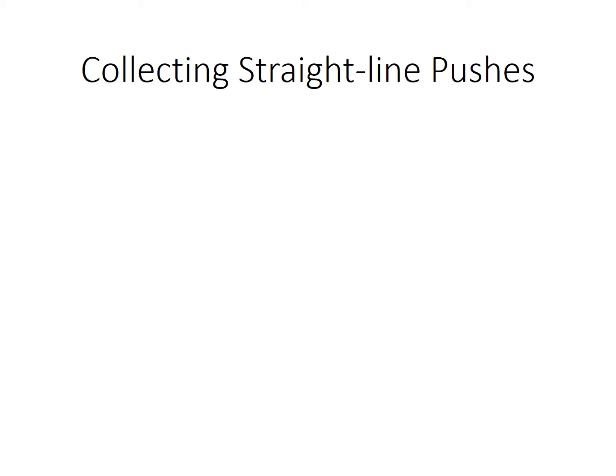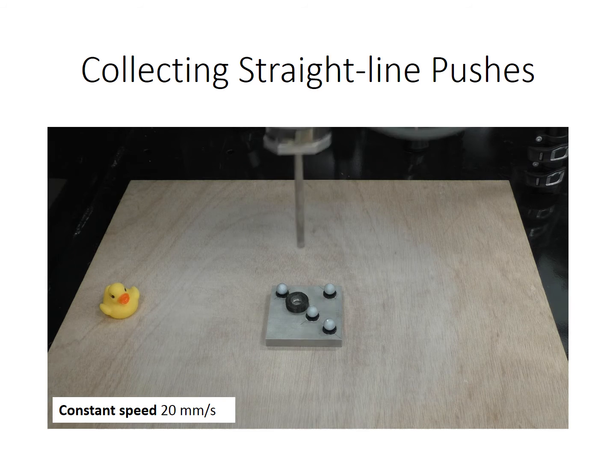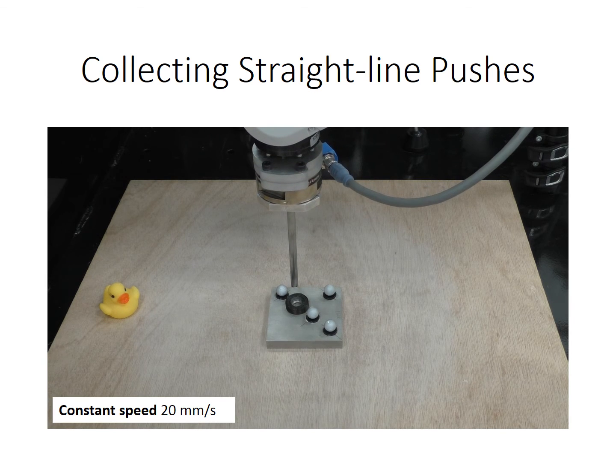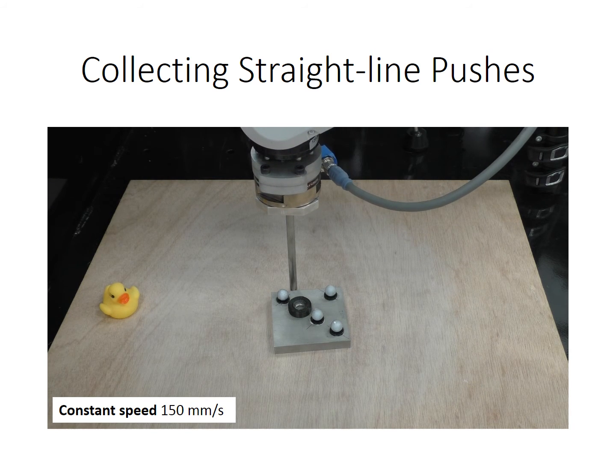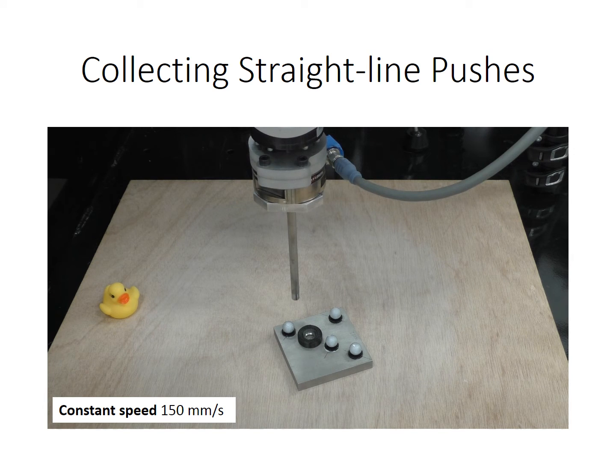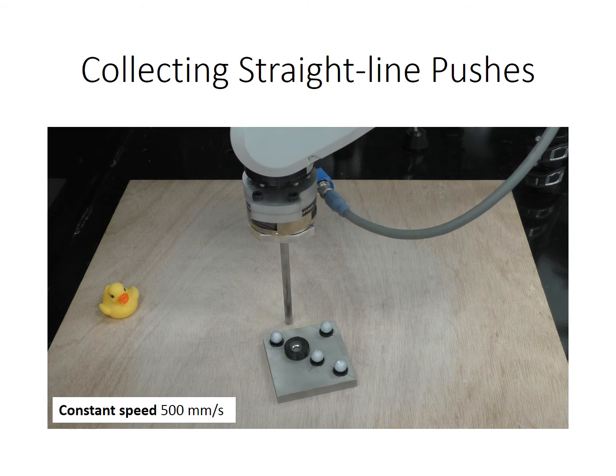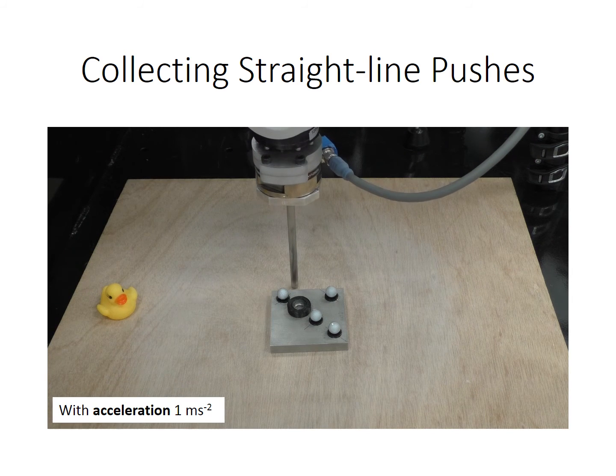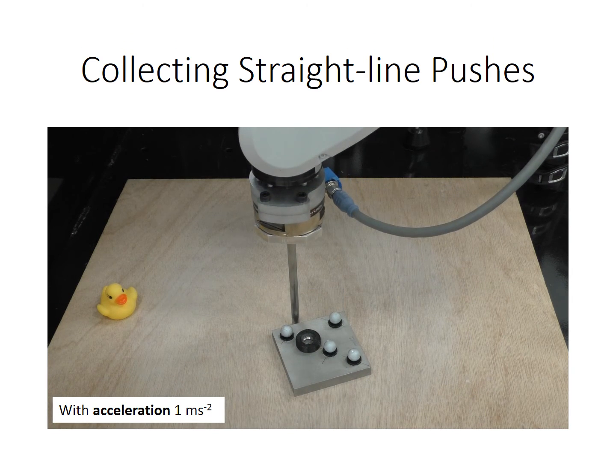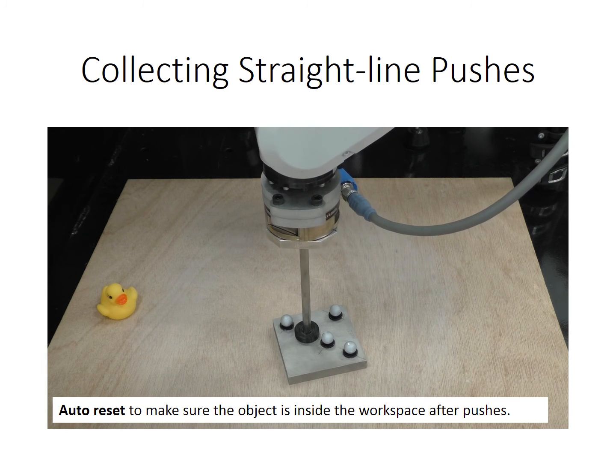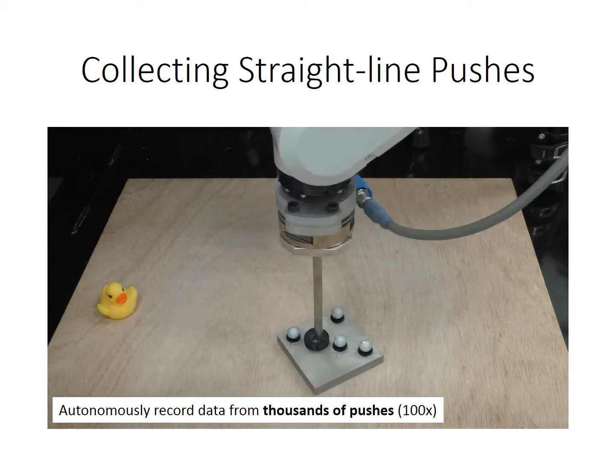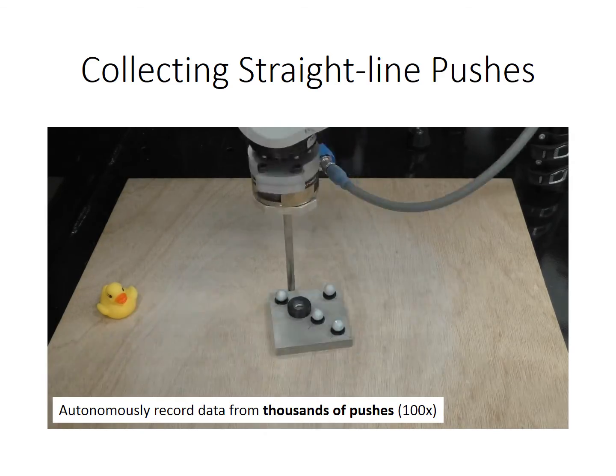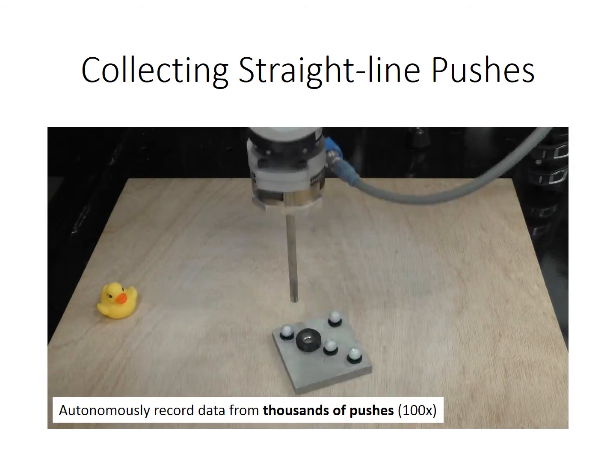Here we show some examples of our experiments. First, pushing with very slow and quasi-static speed. Next, pushing with higher speed. Third, pushing with highest speed. Pushing with constant acceleration. We have an auto-reset mechanism to make sure the object is inside the workspace after several pushes. The auto-reset mechanism allows the robot to collect thousands of pushes fully autonomously.